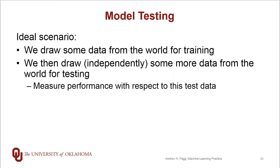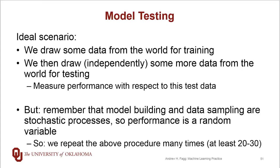The ideal approach is to sample data from the world, use that for training our model, and then draw an independent set of data for testing. We feed that in, ask the model what it predicts, compare against ground truth, and compute a performance metric like area under the curve or skill score. One thing to keep in mind is that this whole process of sampling data and building models is actually a stochastic process in and of itself — the sampling involves randomness, and many model building procedures also involve a degree of randomness.